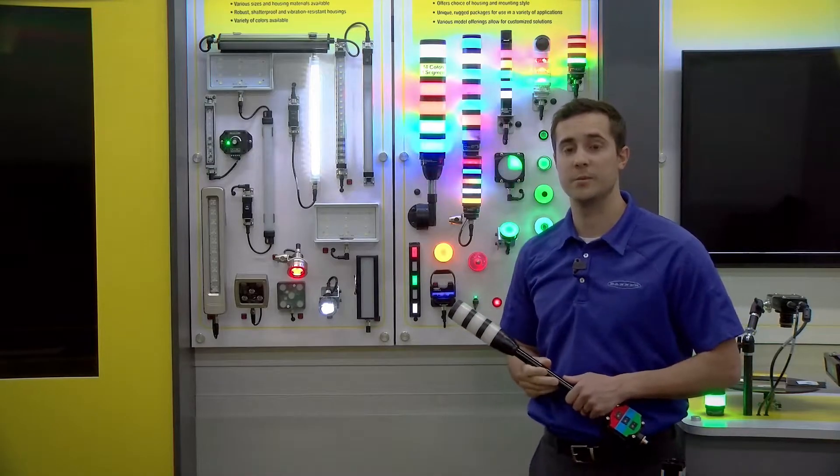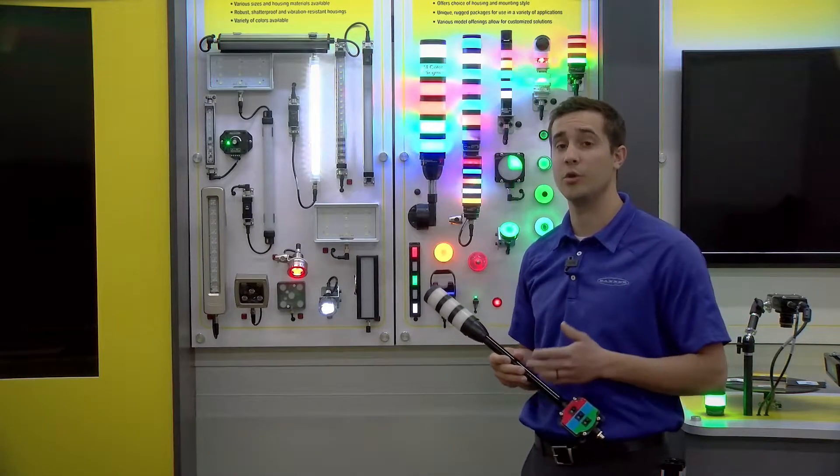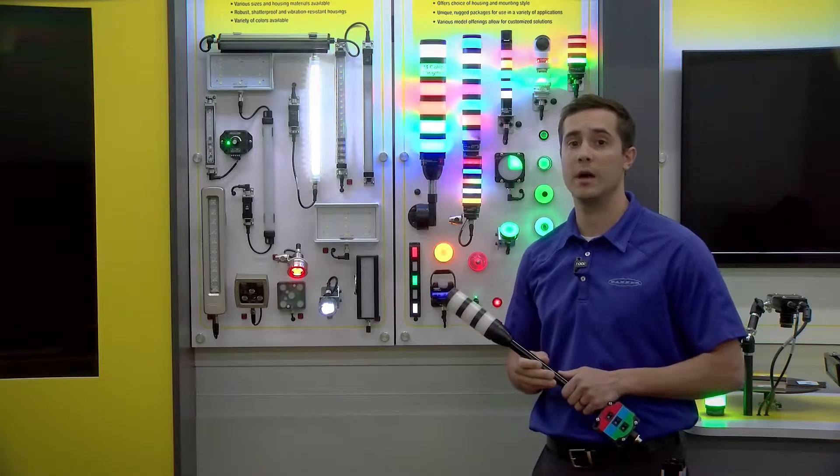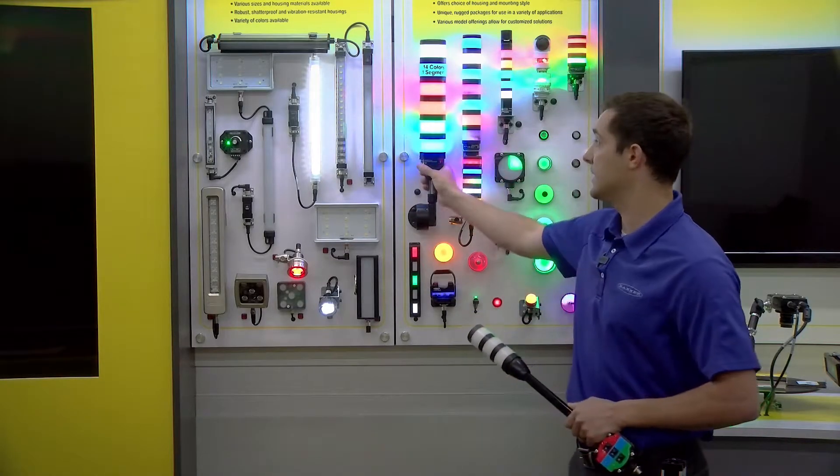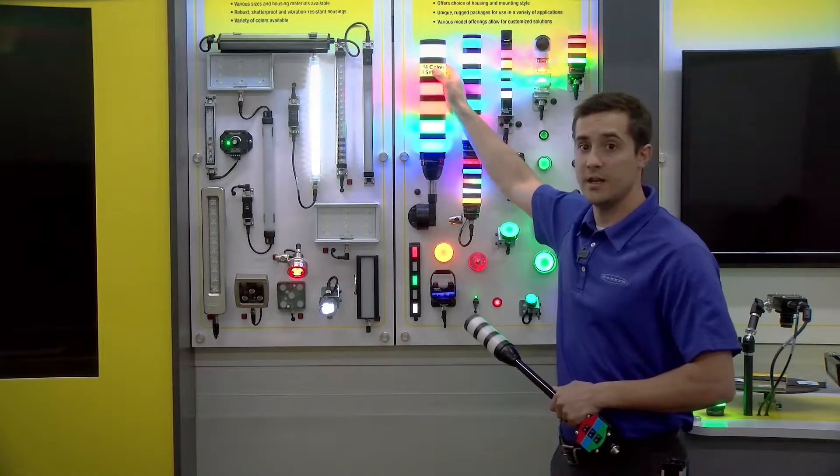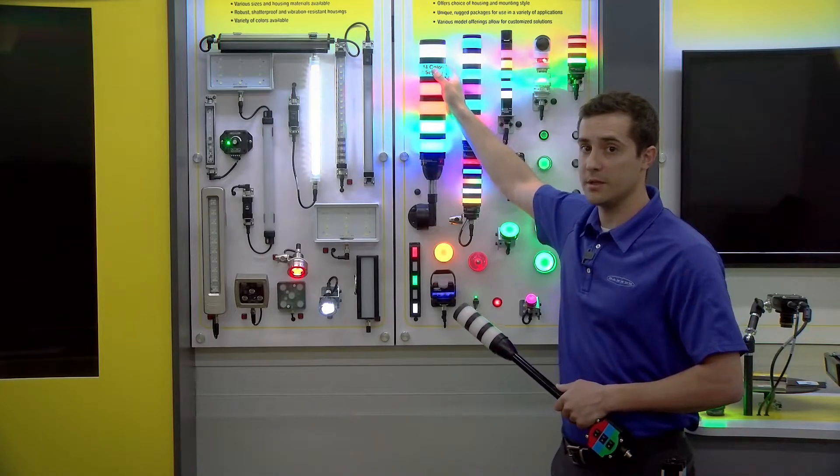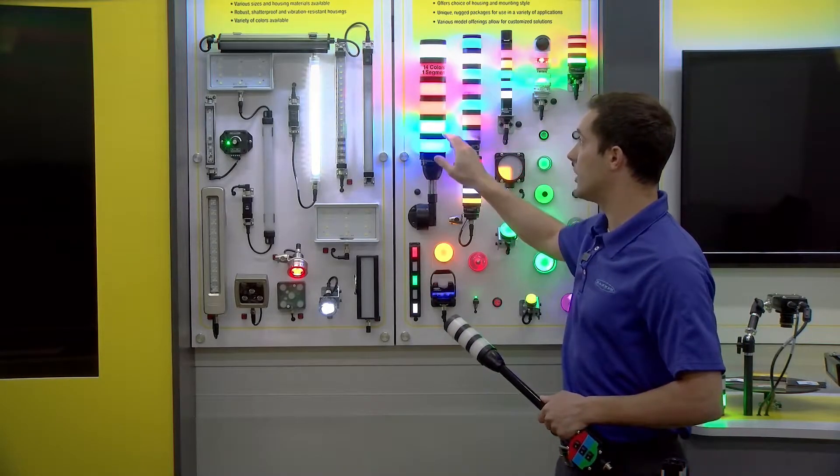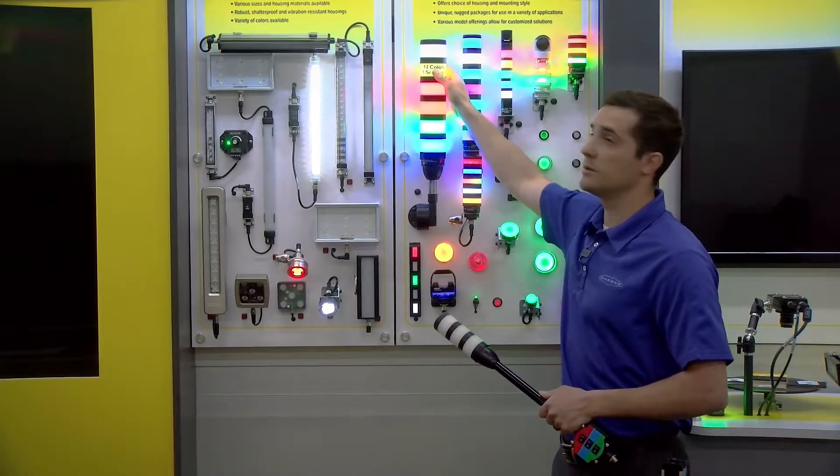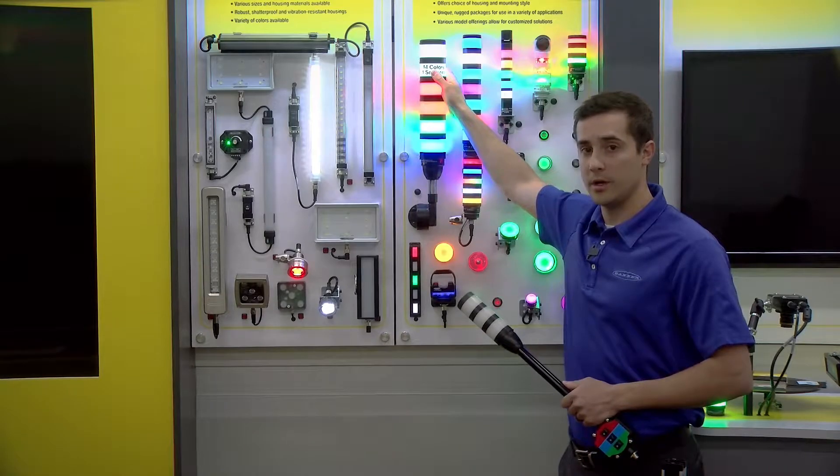For example, with one specific material handling customer we were able to reduce their tower light part count from 22 different parts all the way down to four because we have a single base that works with all these different segments and in addition to that a single part number for this 14 color segment. So in contrast to ordering different part numbers for each color, the customer was able to standardize on just those four part numbers.